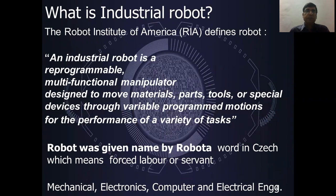First, we will talk about the industrial robot. Robotics is a reprogrammable, multifunctional manipulator designed to move materials, parts, tools and spatial devices through variable programmed motions for the performance of a variety of tasks. In the industrial robot, we can perform multi-functions and movements for a variety of tasks.